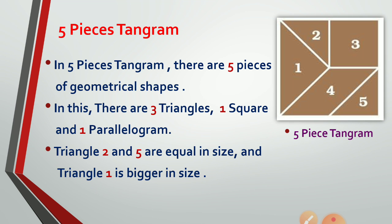Now we will look at both types of tangram one by one. First, the five-piece tangram: it contains five pieces of geometrical shapes — three triangles, one square, and one parallelogram. Out of the three triangles, triangles two and five are equal in size, while triangle one is bigger in size, as you can see in the given figure.